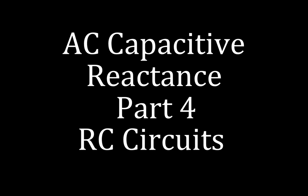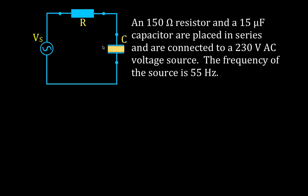Today's video is entitled AC Capacitive Reactance Part 4, and we're going to go over circuit analysis for a series RC circuit. We have a resistor and a capacitor — an RC circuit with a time-varying voltage source. The problem gives us a 150 ohm resistor and a 15 microfarad capacitor placed in series, connected to a 230 volt source at a frequency of 55 Hz.